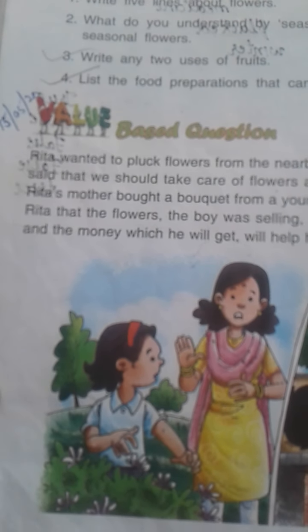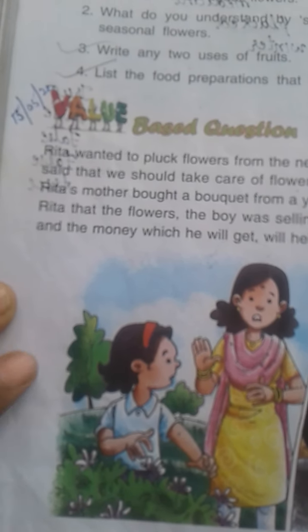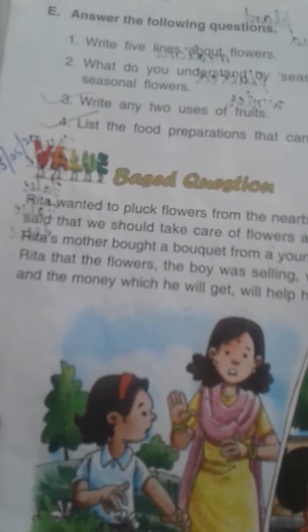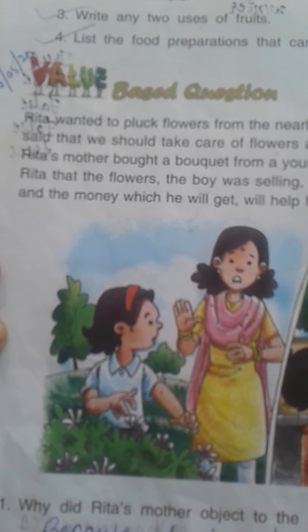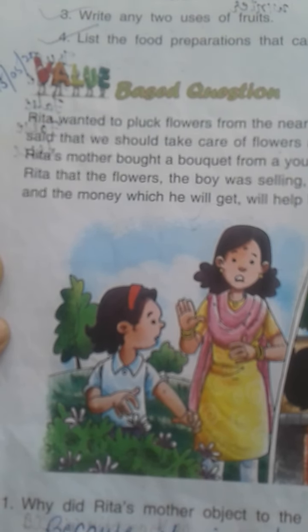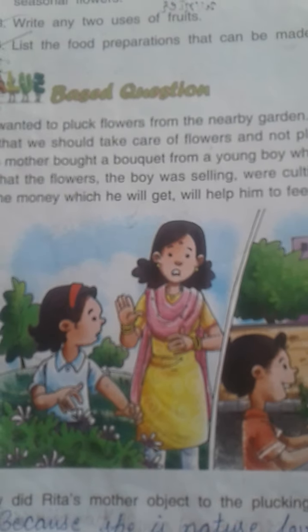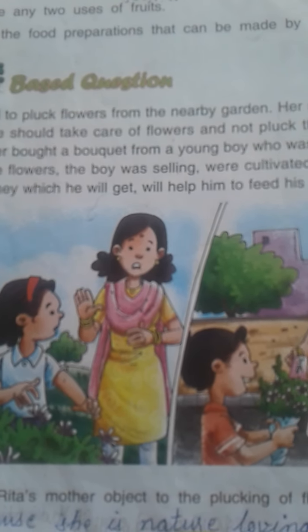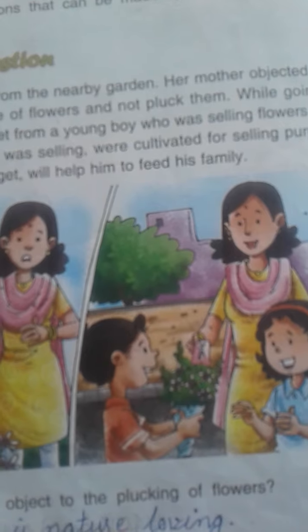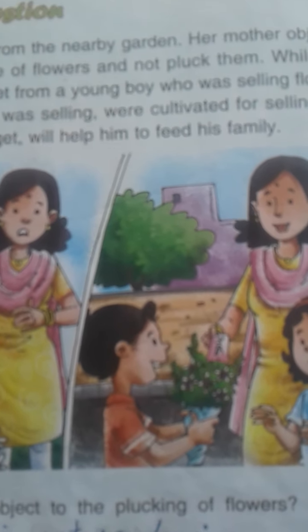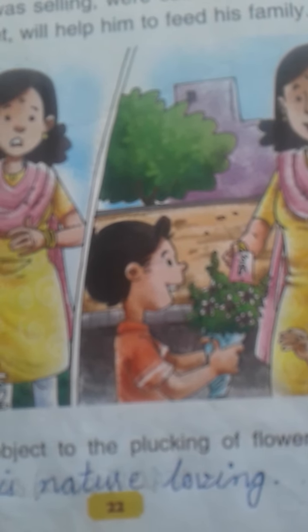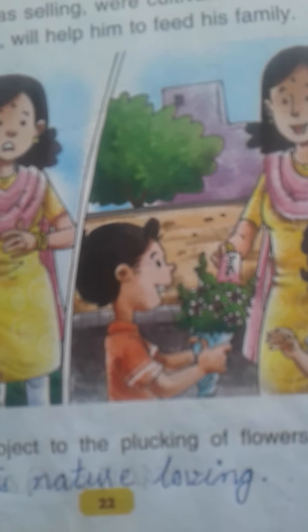She told Rita that there is no need to pluck the flowers. She objected to Rita plucking the flowers. When she was going back home along with Rita, she bought a bouquet from a boy. Here is the boy — he is selling a bouquet.